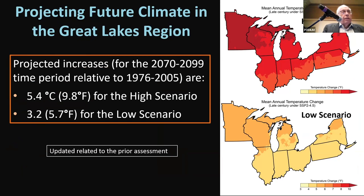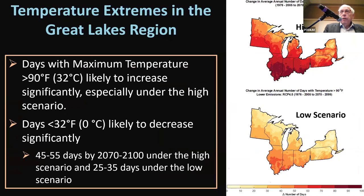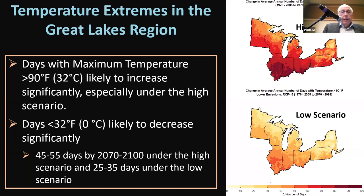Looking at extreme temperature variations: days above 90 degrees Fahrenheit by the middle or end of the century are likely to increase dramatically in the Great Lakes region. Likewise, the number of days below freezing is likely to decrease significantly — by almost two months in the high scenario by the end of the century, and by about one month under the low scenario.